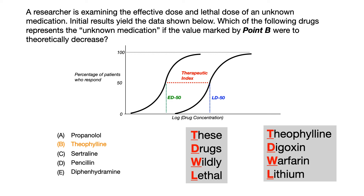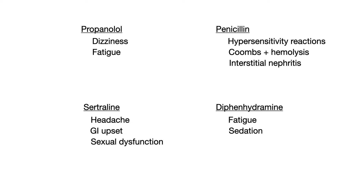Obviously I'm taking some liberties by making that statement, but let's approach the question this way. If you look at the other four medications and list out their side effects, one could argue these are not very severe and there just aren't a lot of them. Propranolol causes dizziness and fatigue. Sertraline causes headache, GI upset, and sexual dysfunction. Diphenhydramine causes fatigue and sedation. And penicillin causes hypersensitivity reactions, Coombs-positive hemolysis, and interstitial nephritis. You might look at penicillin and think those seem like pretty severe adverse effects — maybe the therapeutic index is narrow. But think about the sheer number of patients in real life who are on these medications. Penicillin is the prototypical antibiotic; millions of people have taken it. Diphenhydramine — that's Benadryl — you can get it over the counter, so it doesn't have a narrow therapeutic index. Sertraline is one of the most widely prescribed SSRIs and is incredibly safe. And propranolol is one of the most widely used medications.